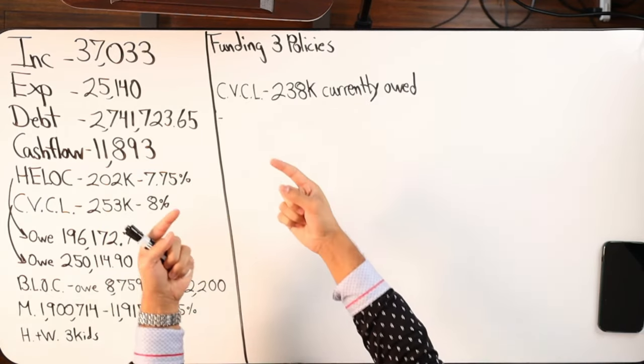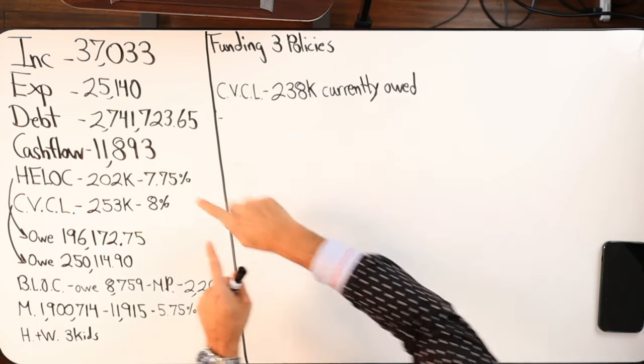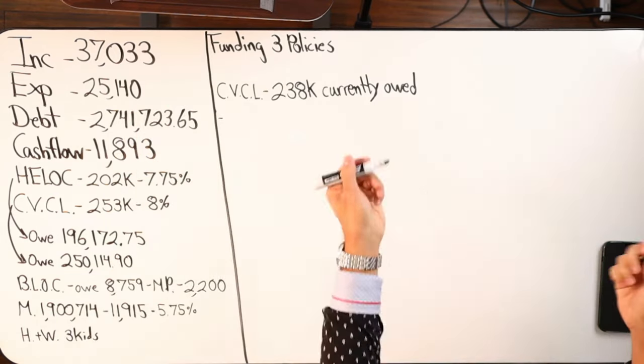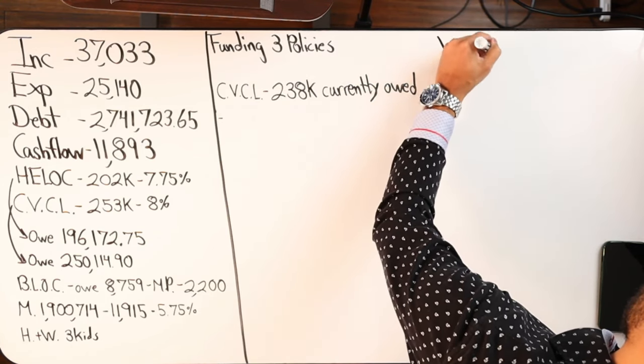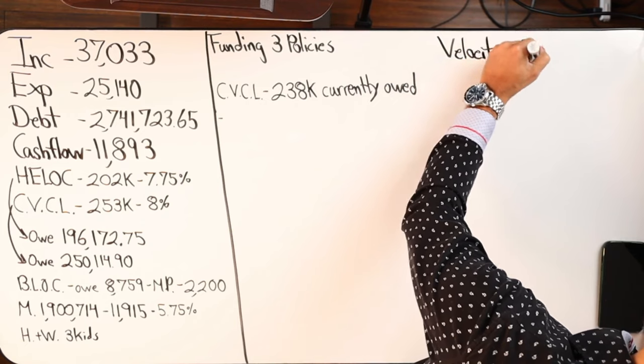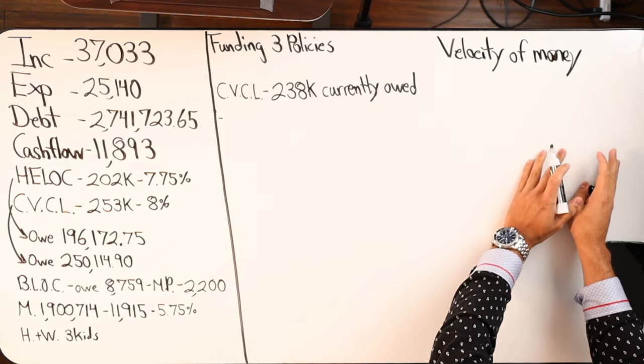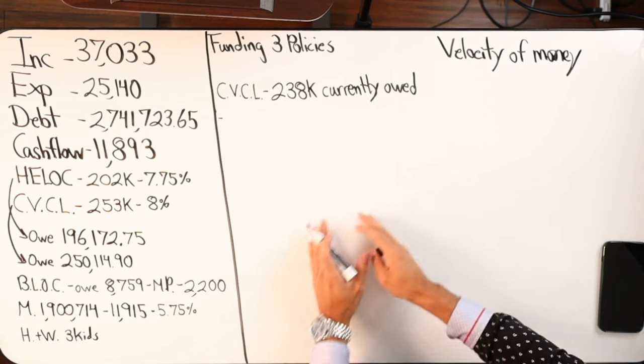So where velocity banking comes in is how we improve the flow. Velocity banking is essentially increasing the velocity of money, the speed and direction of how your money flows and how it moves.